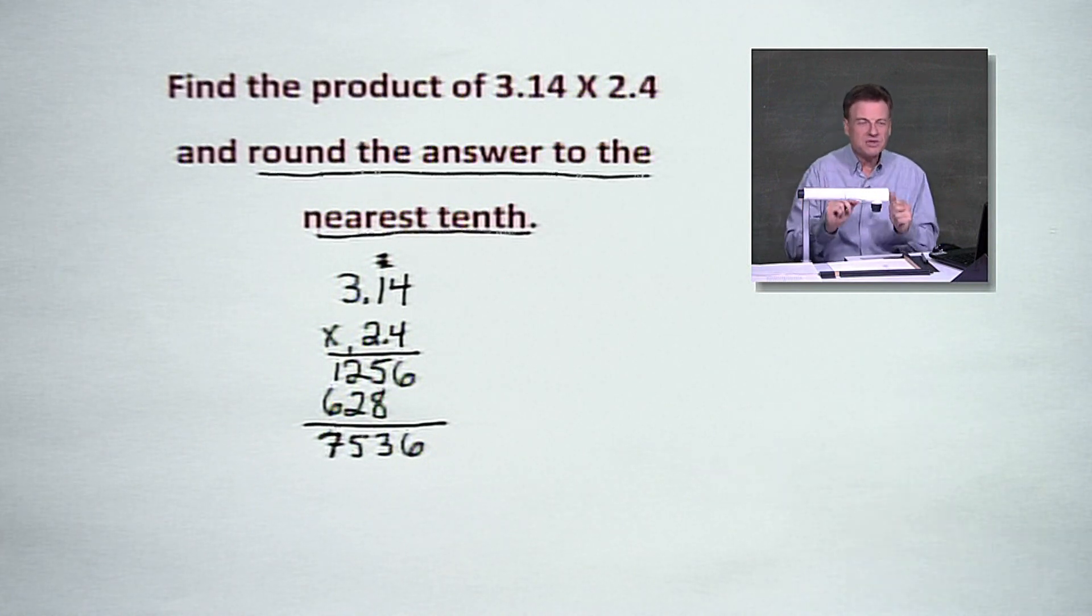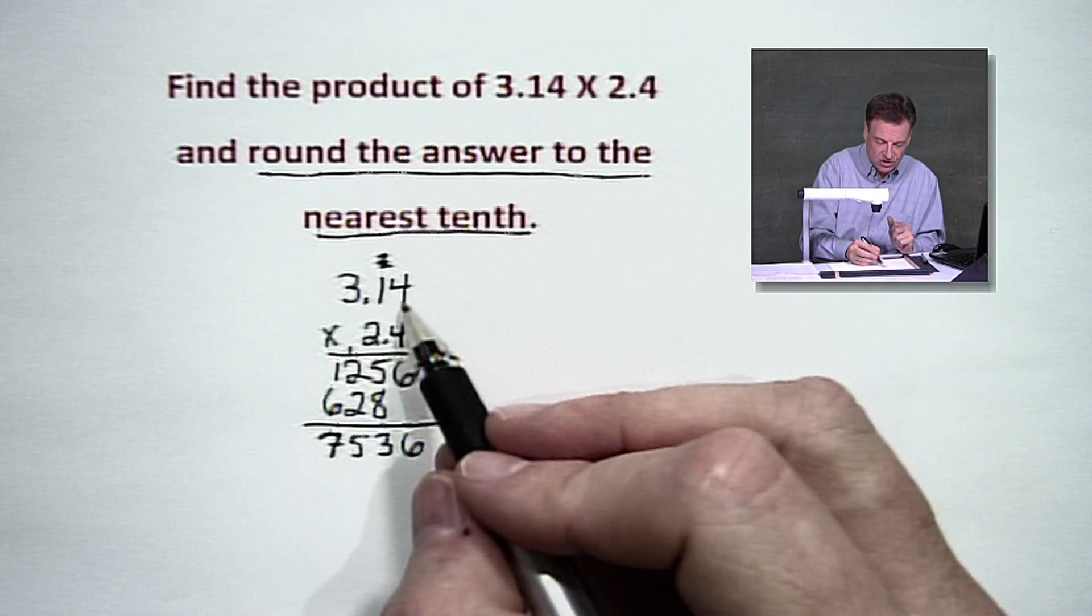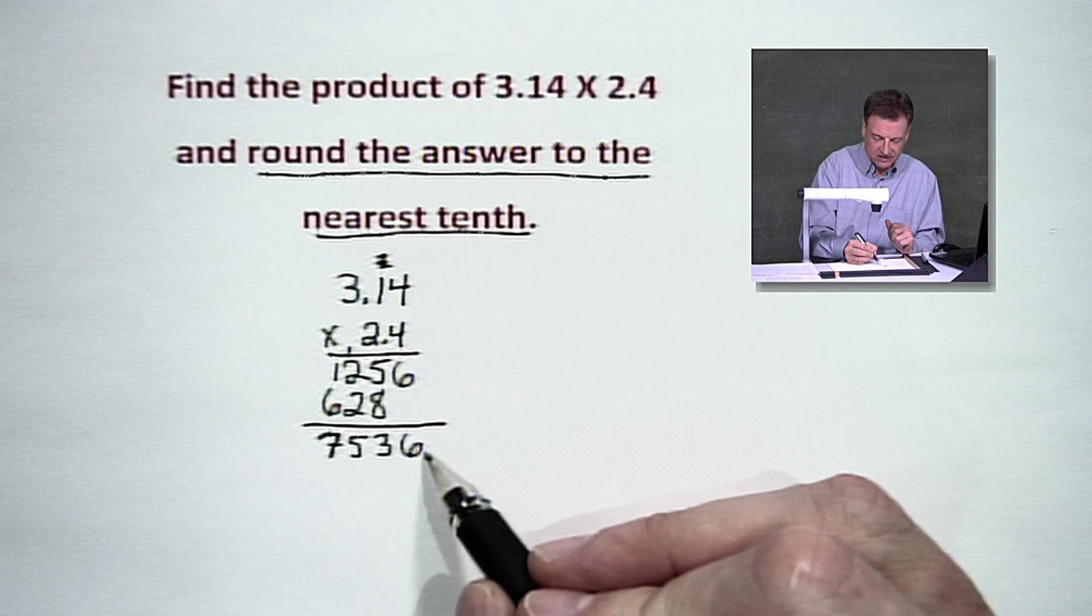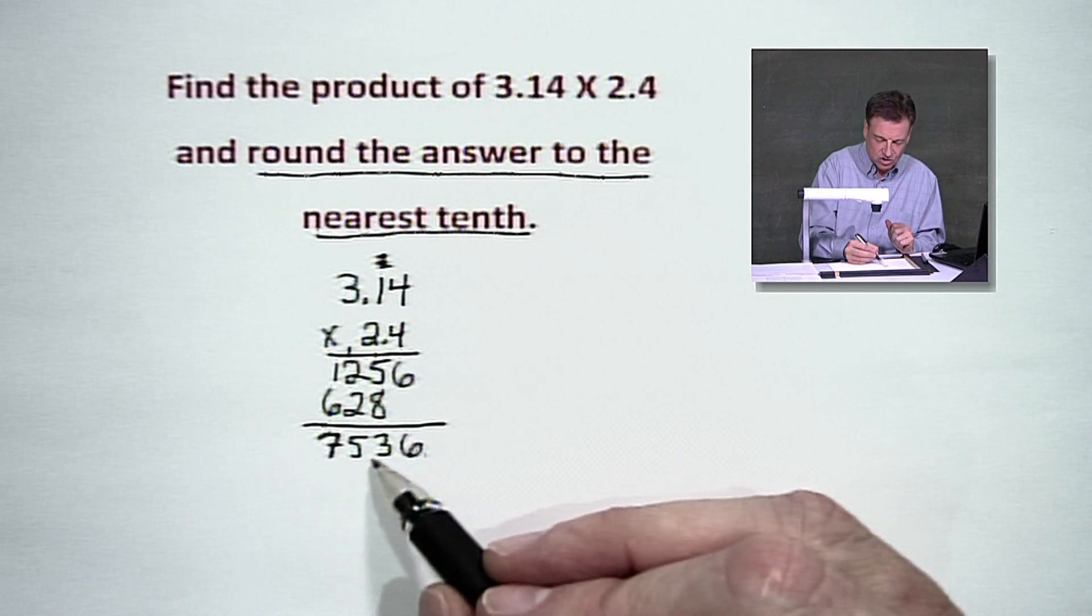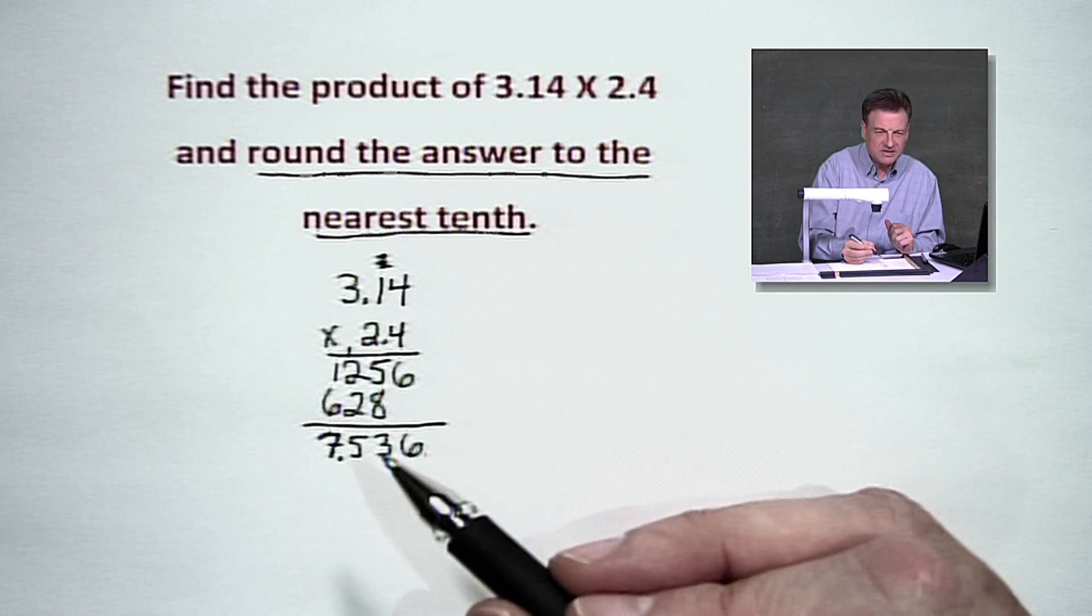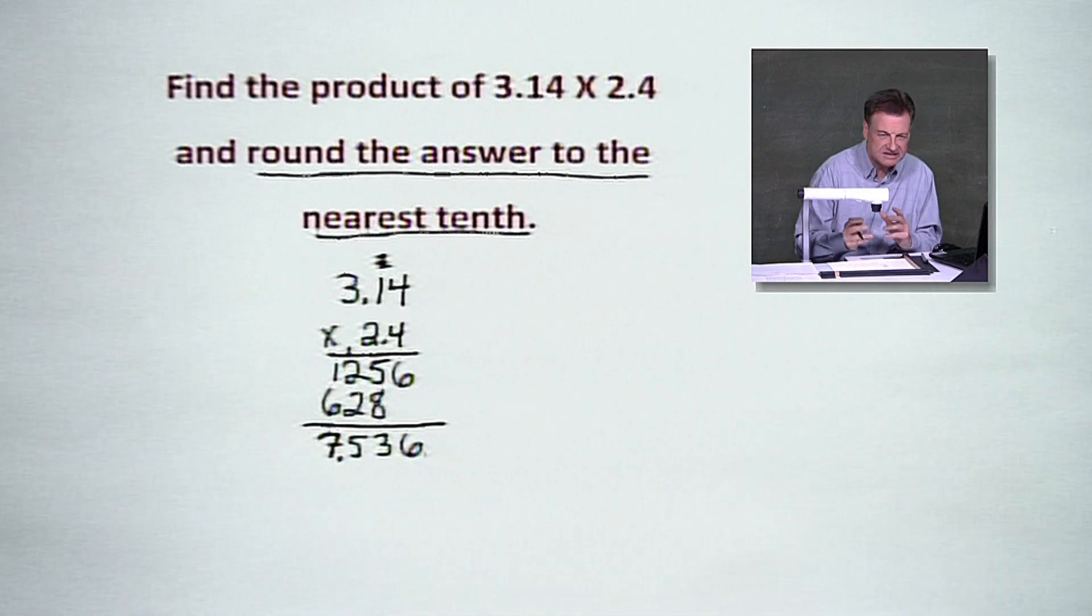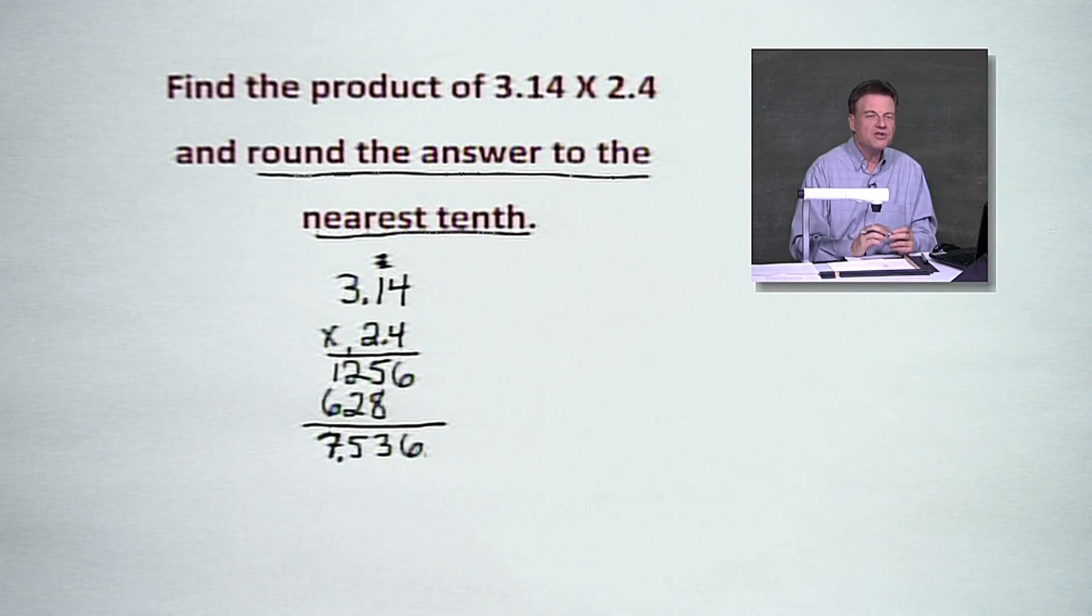Now, as I said, important. Where do we put the decimal? I've got 1, 2, 3 places. I've got to count in from the end. 1, 2, 3. It's going to put it right between the 7 and 5. So basically, it's 7 and 536 thousandths.